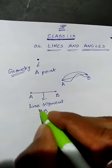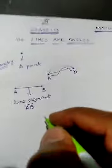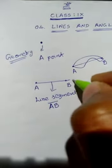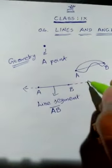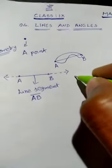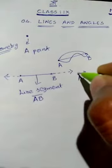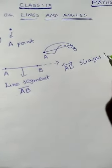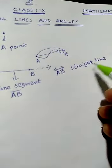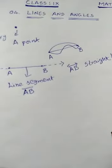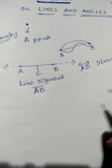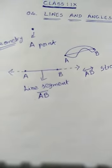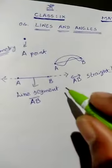We simply write it as AB bar. You can write it as AB bar or BA bar. But when you extend this AB bar continuously in both directions, we call it a straight line. So the difference is: this is line segment, and this is straight line — also called line AB. A line is extended continuously in both directions of a line segment.